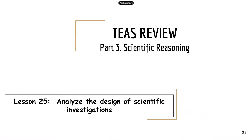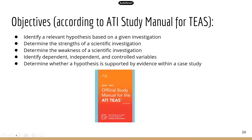Hey everyone, this is the very last lesson in our TEAS science review — we're almost there. Today we're going to look at how to analyze the design of scientific investigations. These are objectives from ATI: you should be able to identify a relevant hypothesis based on a given investigation — they will give you a scenario with a research question and you need to come up with the appropriate hypothesis.